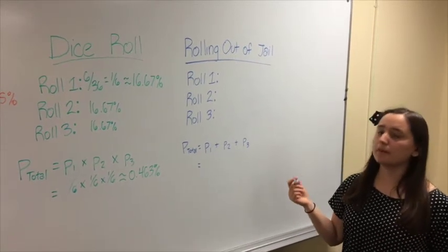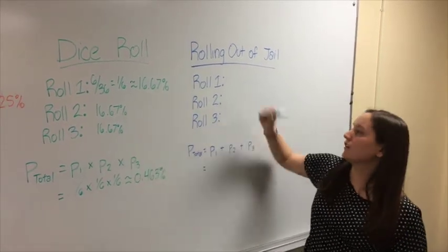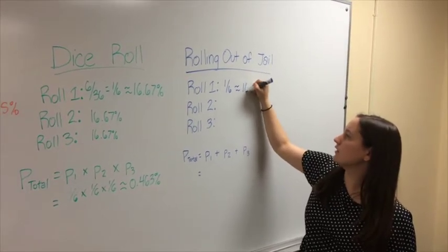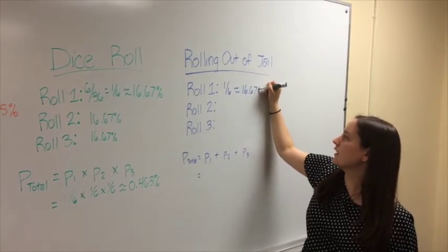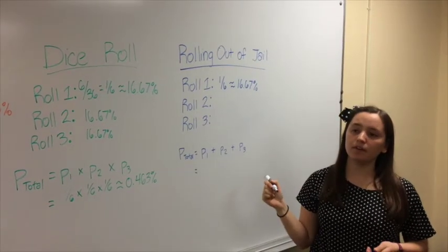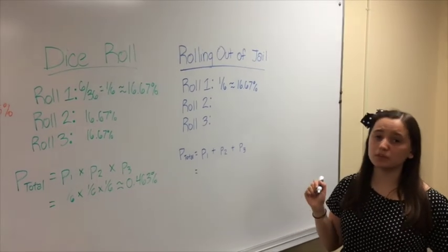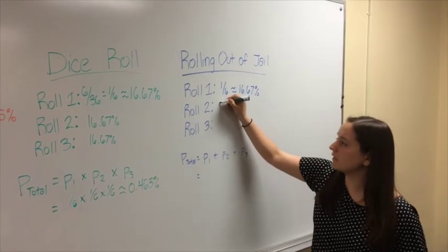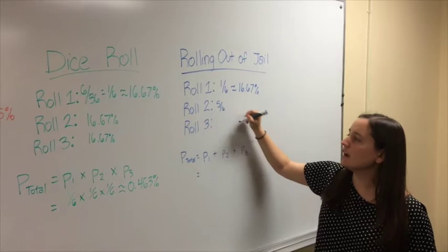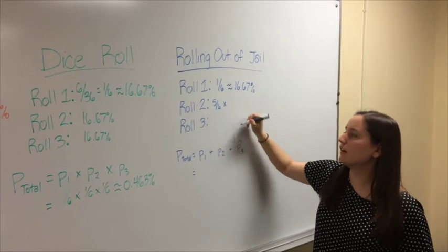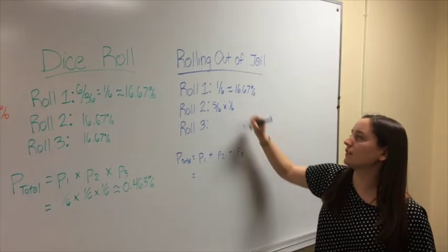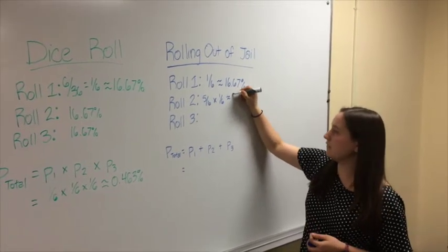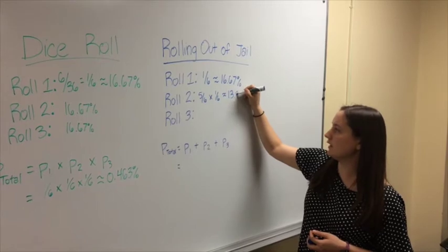So, the first roll, the chance of rolling doubles, is the same as over here. So we have our 1 sixth, which is equal to 16.67%. So, now the second roll. The second roll is assuming you didn't roll doubles on the first roll. So if you didn't roll doubles on the first roll, that's a 5 sixth probability. And then you have to multiply that by the 1 sixth chance of you actually rolling the doubles and getting out of jail. So this percentage is about 13.89%.